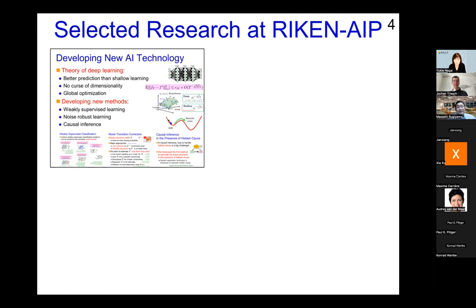Here is a snapshot of our research at Riken AIP. One group works on fundamental machine learning, which I also belong to. We study the theory of deep learning — trying to mathematically understand why deep learning works well. Already some mysterious facts have been revealed through theoretical analysis. We are also developing new machine learning technologies: weakly supervised learning, noisy labels learning. Nowadays, some teams are also working on causal inference, which is quite an important topic.